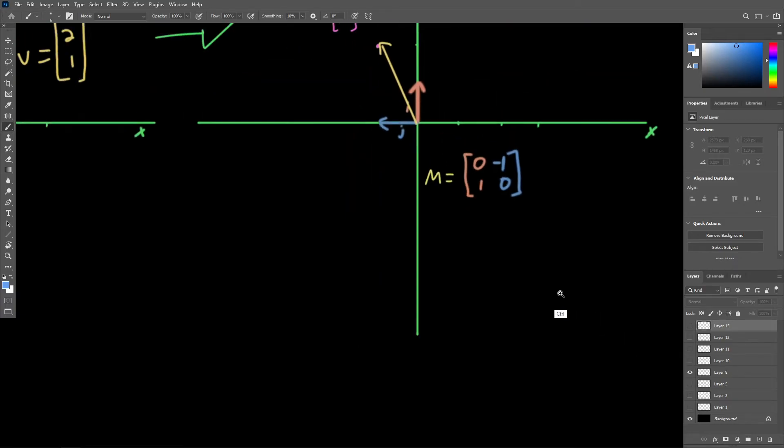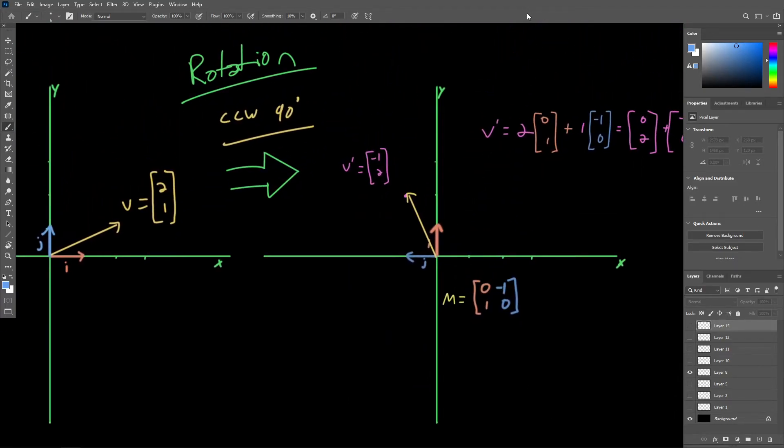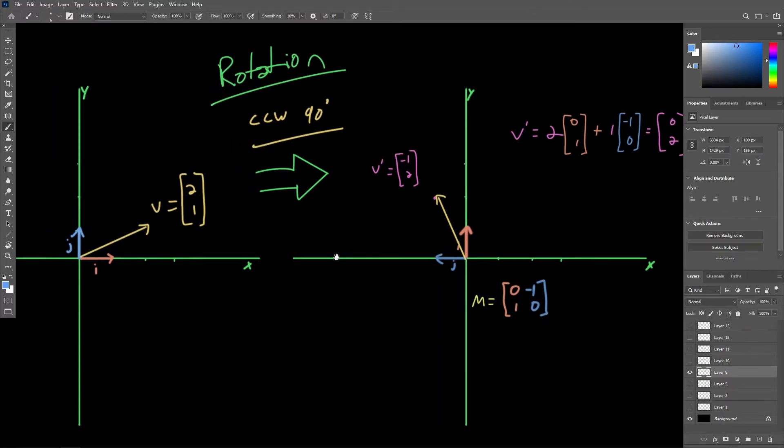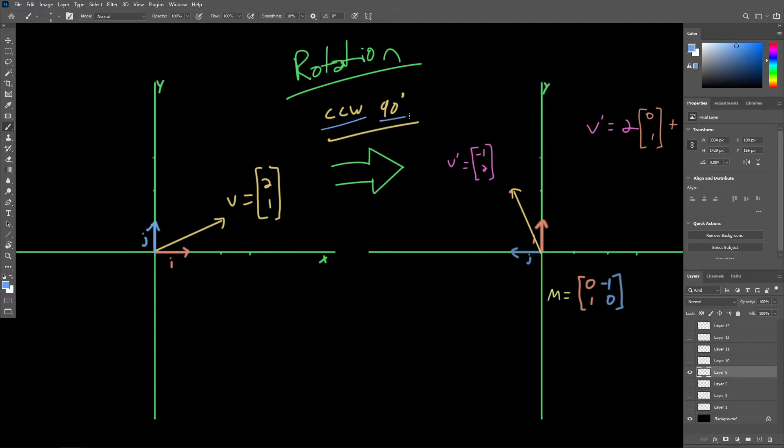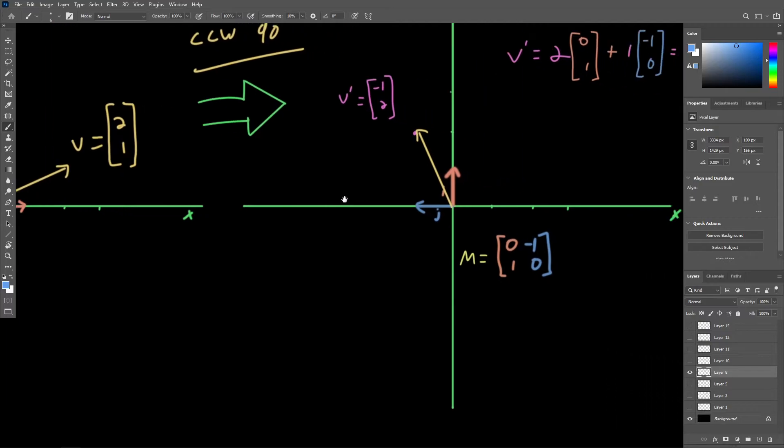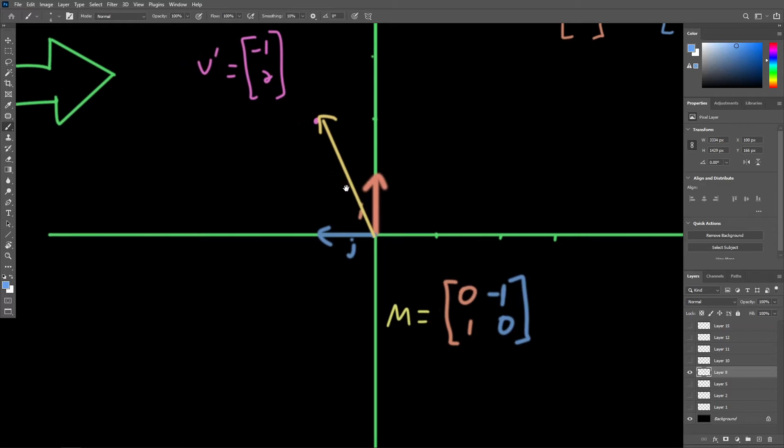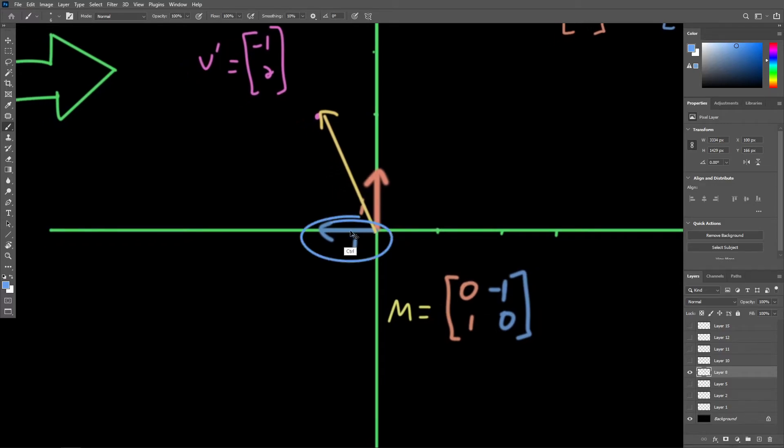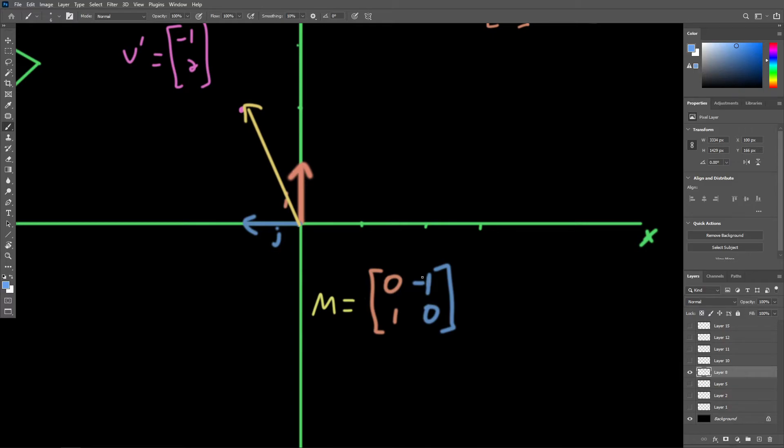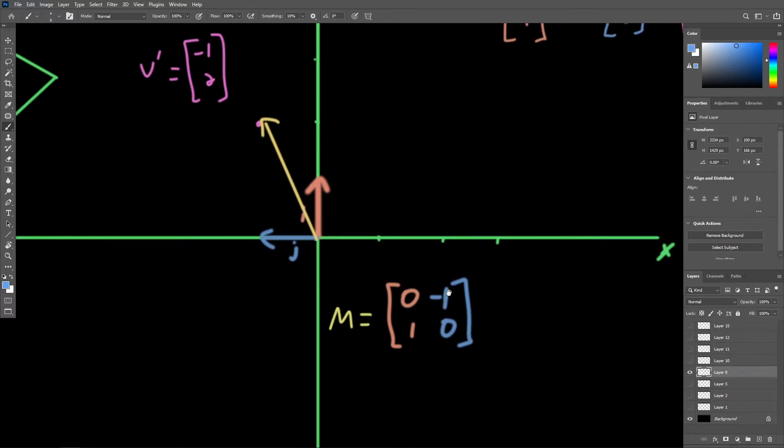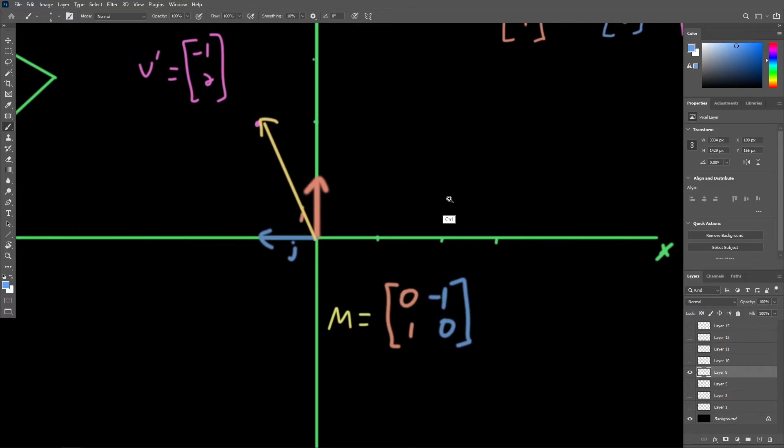So if we take a look at that drawing that we did back in the matrices and transformations video, we can see that in order to do this counterclockwise 90 degree rotation, we obtained a new set of basis vectors. Where i pointed up on the y-axis, so its coordinates was zero and one, and the j basis vector was pointing negative one on the x-axis and zero on the y.